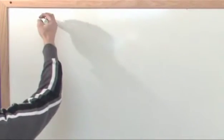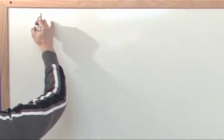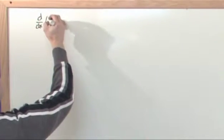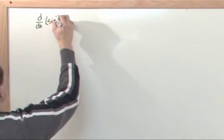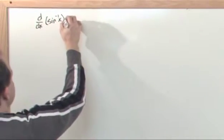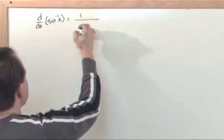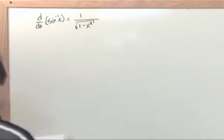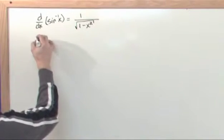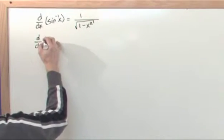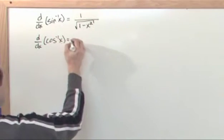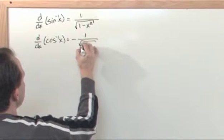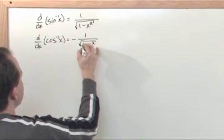The derivatives of the inverse trig functions are as follows. The derivative of the inverse sine function is equal to one over the square root of one minus x squared. The derivative with respect to x of the inverse cosine function is very similar — it's negative one over the square root of one minus x squared.